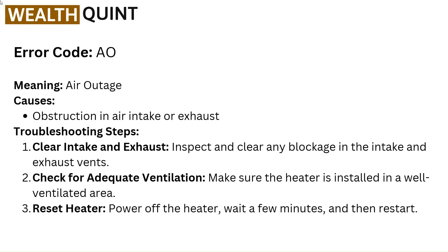Error code AO — meaning Air Outage. Causes: obstruction in air intake or exhaust. Troubleshooting steps: Clear intake and exhaust — inspect and clear any blockage in the intake and exhaust vents. Check for adequate ventilation — make sure the heater is installed in a well-ventilated area. Reset heater — power off the heater, wait a few minutes, and then restart.